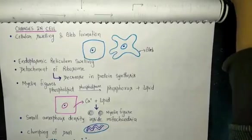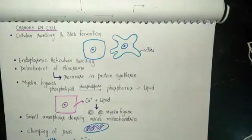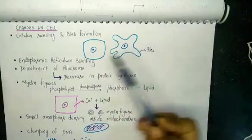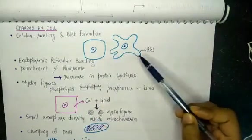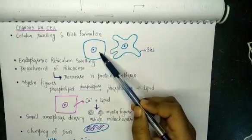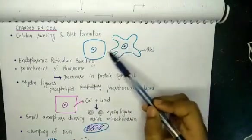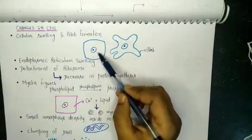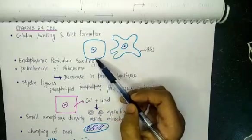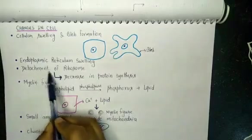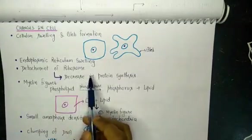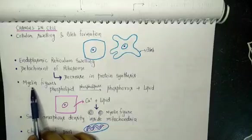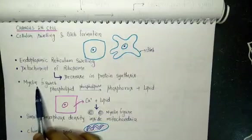Changes observed after reversible cell injury: first is cellular swelling and bleb formation — due to dysfunction of the sodium-potassium ATPase pump, sodium and water are retained inside the cell, leading to cellular swelling and bleb formation. Second is endoplasmic reticulum swelling — because the ER is an organelle inside the cell, it also swells. Due to swelling of the endoplasmic reticulum, there is detachment of ribosomes, leading to decreased protein synthesis.